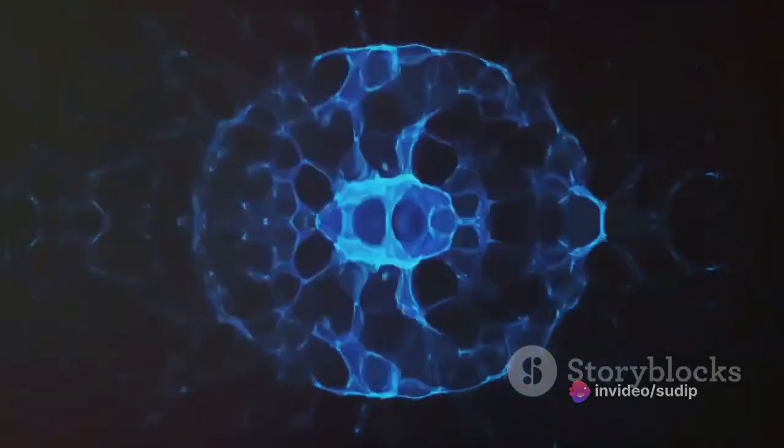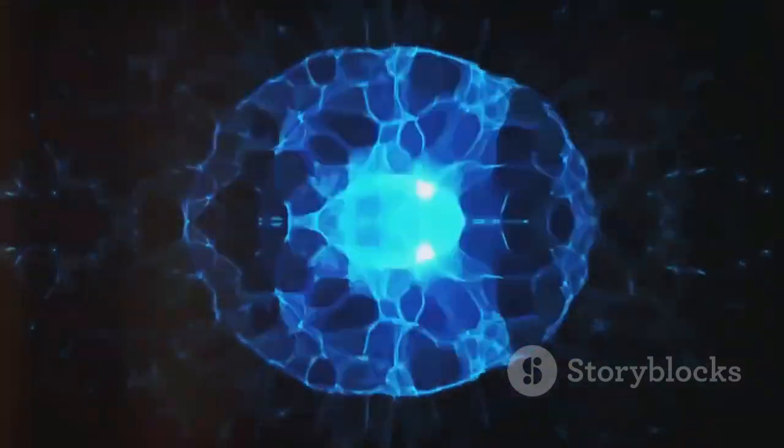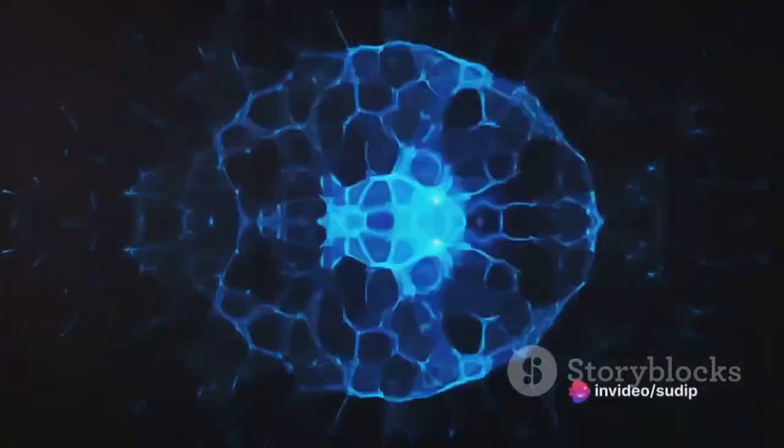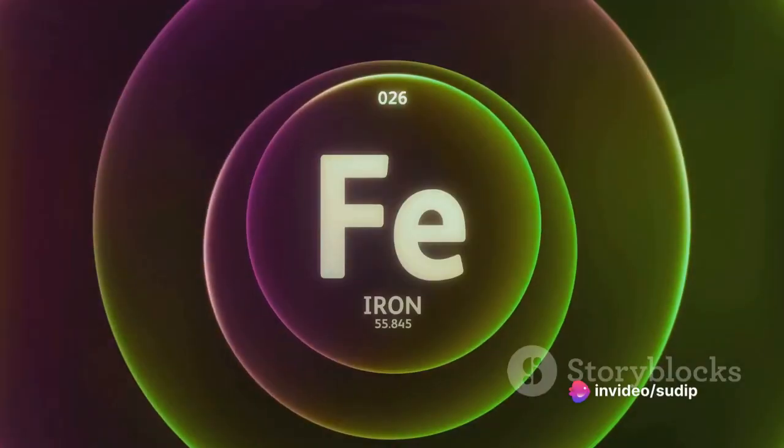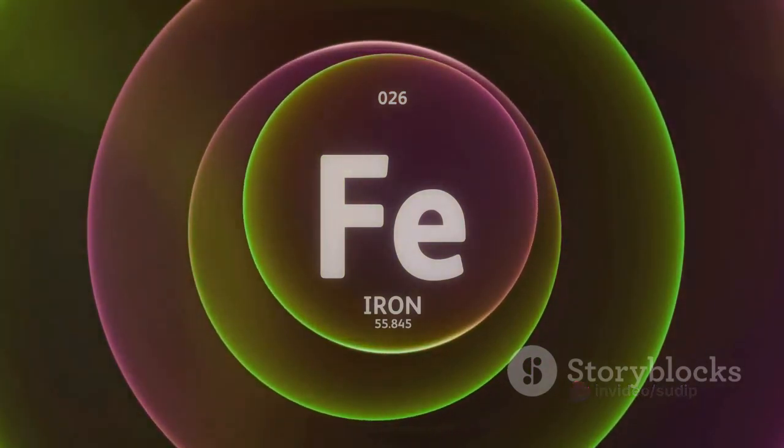In essence, it's a measure of how tightly the nucleons, protons and neutrons, are held together. Interestingly, iron-56, a specific isotope of iron, has the highest nuclear binding energy per nucleon, making it the most stable nucleus.